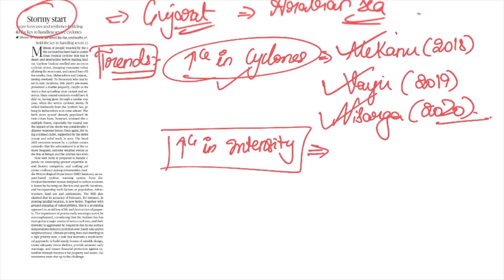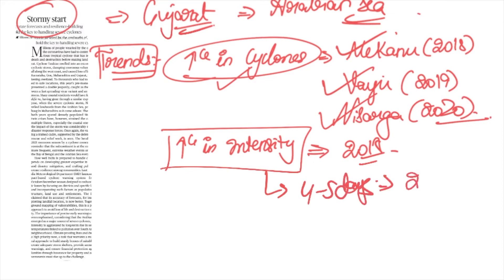Another trend observed is not only is the number increasing, there is also an increase in intensity over time. Arabian Sea cyclones since 2018 were categorized as severe cyclone or above. To give context of how intense this cyclone is, previous cyclones took four to five days, but this present cyclone has taken just two days to transform into a very severe cyclonic storm.